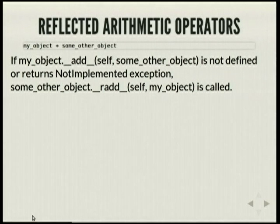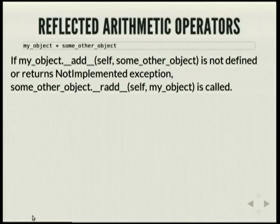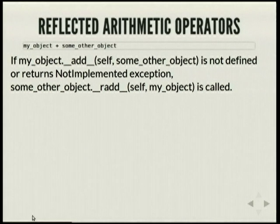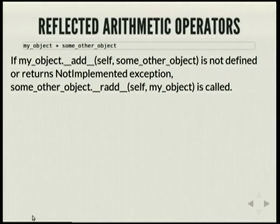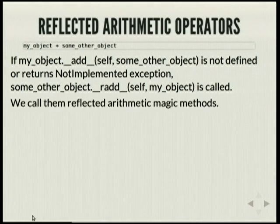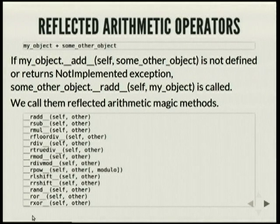Now, reflected arithmetic operators. Let's say you use a custom arithmetic operator, but the first object doesn't actually define the magic method for that operator, or it raises a NotImplemented exception. Then the other object's reflected arithmetic magic method gets called. So __radd__ would get called if my object doesn't have __add__, or its __add__ raises NotImplemented.